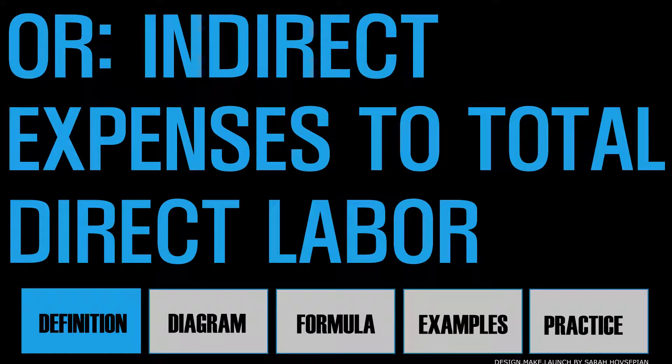Overhead rate is defined as indirect expenses to total direct labor. This concept is on page 417 in the background of key financial performance indicators in the Architects Handbook of Professional Practice, 15th edition. Here you'll find a sample of all seven key indicators in the table — that's really useful.